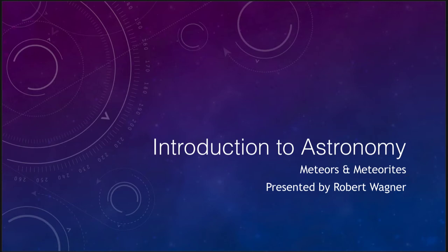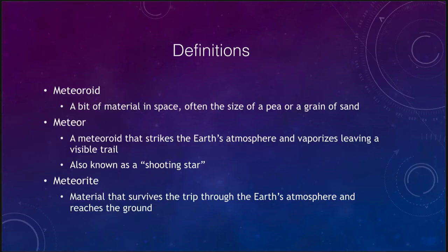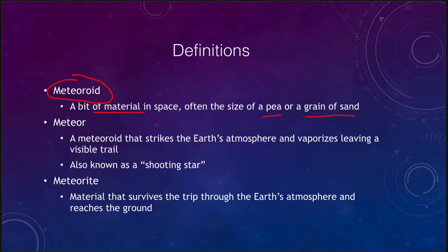Let's go ahead and get started with some definitions. A meteoroid is the first one, and that is the bit of material when it is out in space. These can be very small things like a grain of sand or a pea, small pebbles — very tiny objects out in space we call meteoroids. We have no way of detecting any of these; they're way too small to ever see unless they happen to strike the Earth's atmosphere.